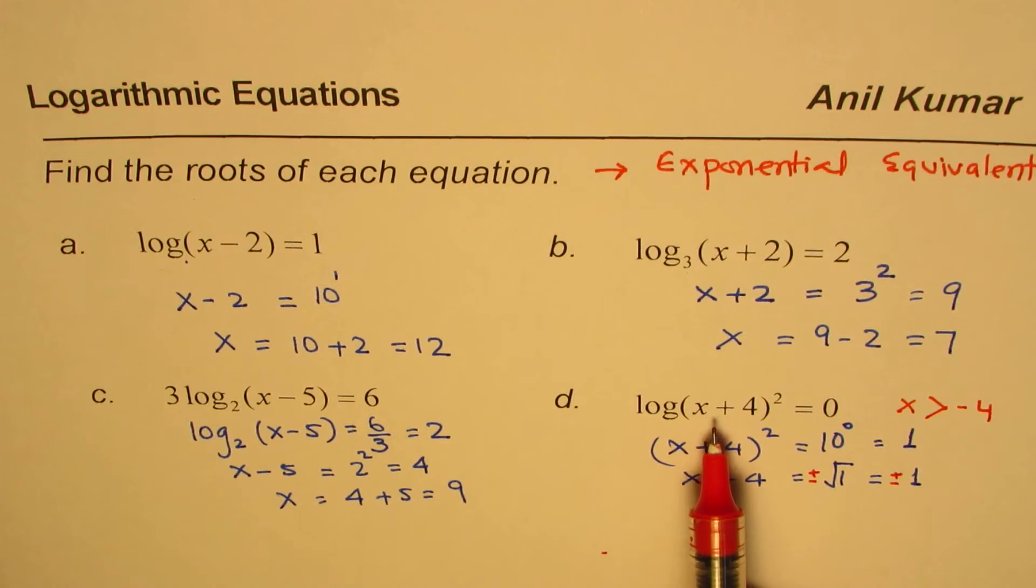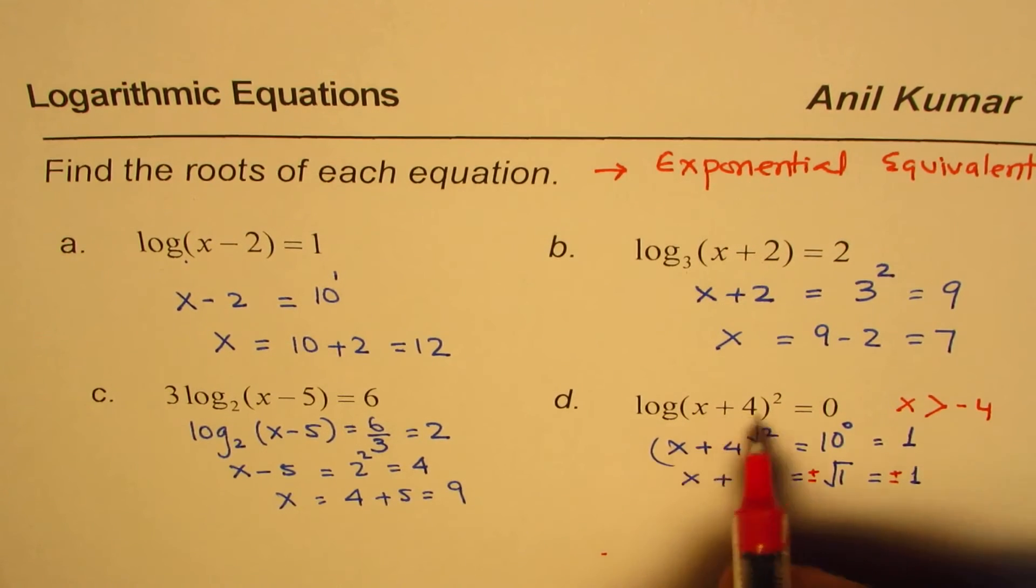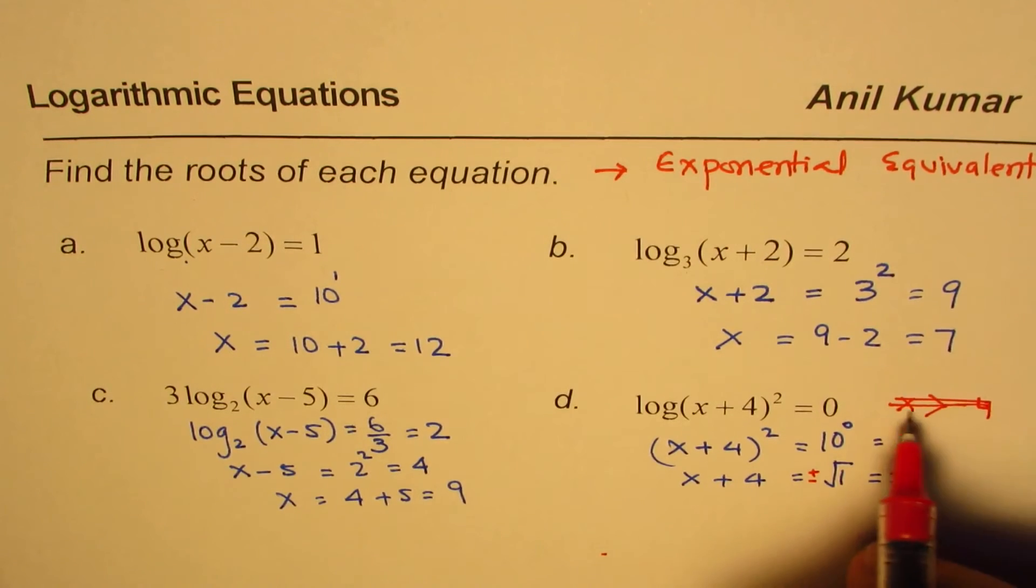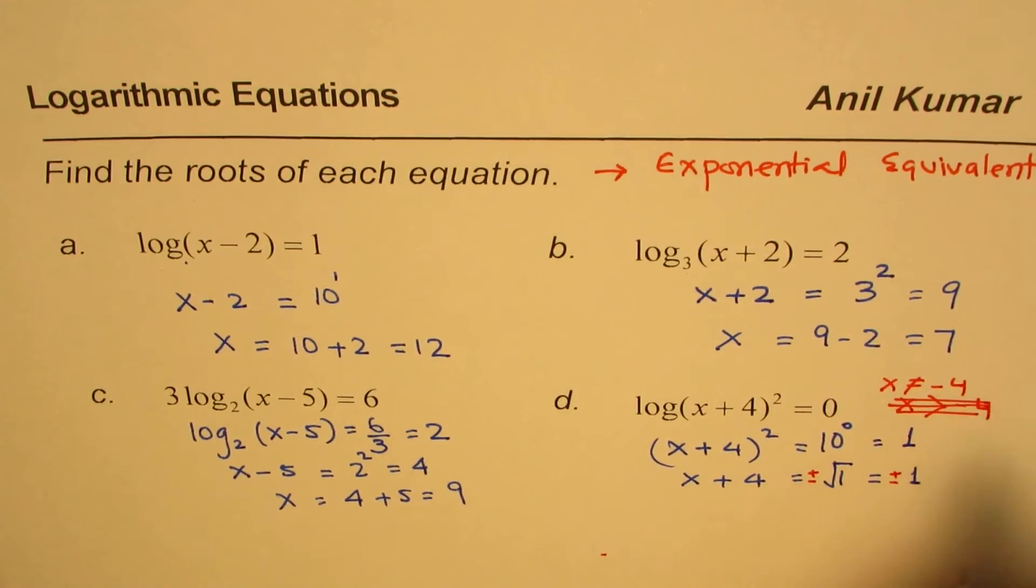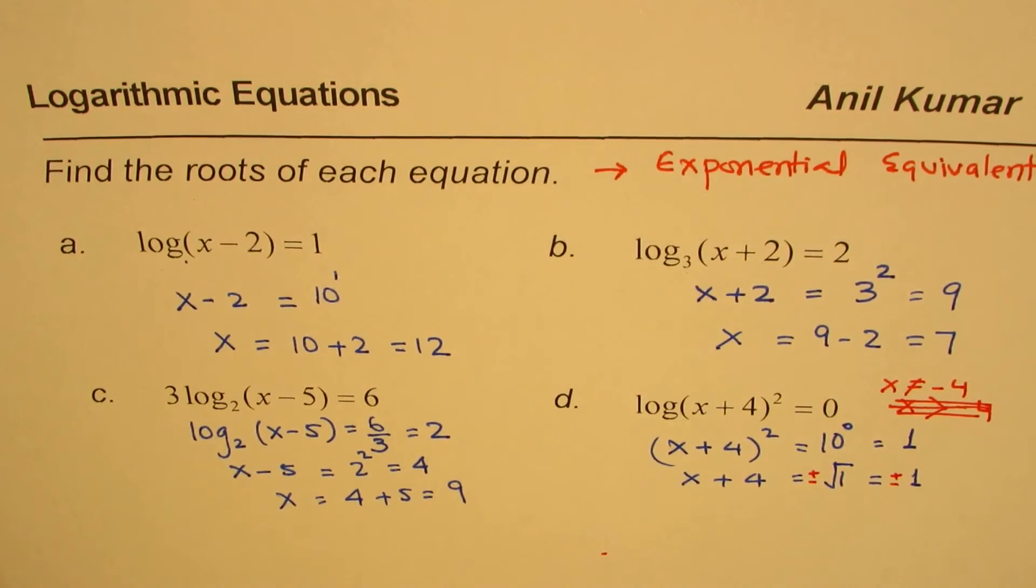But in this particular case, since we square it, everything is valid. It is always true, except for it cannot be minus 4. So in our case, x is not equal to minus 4 is the only restriction.